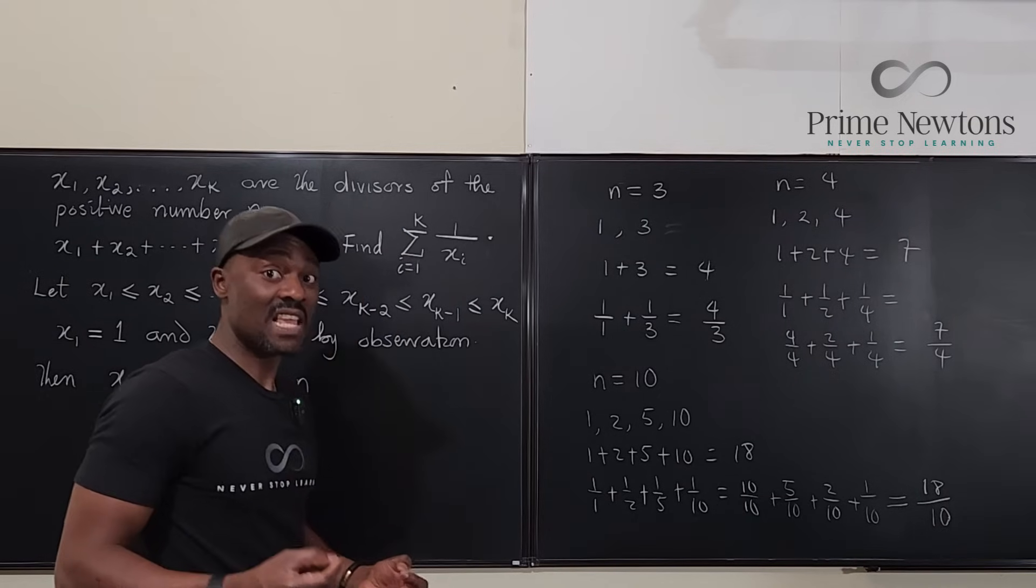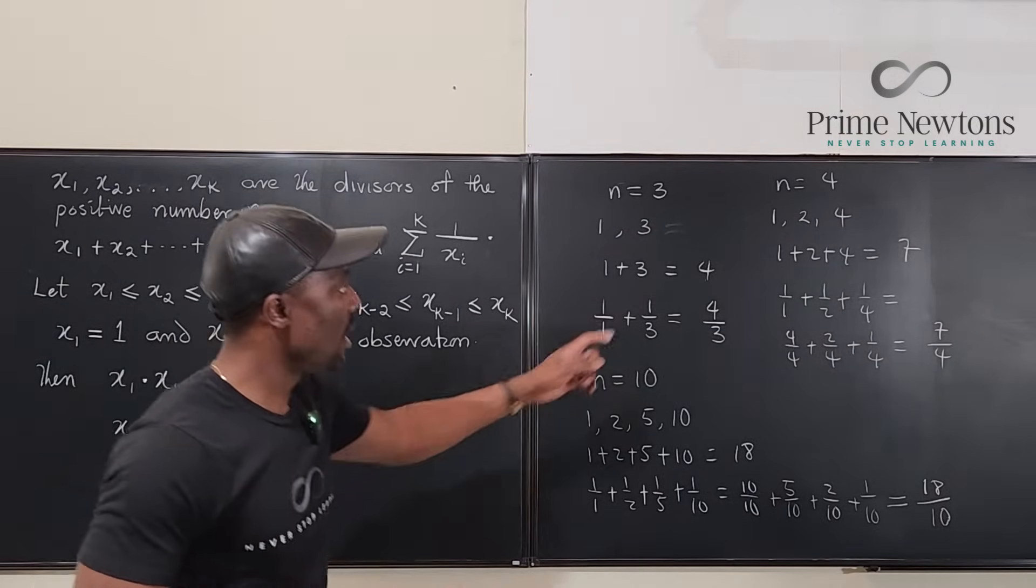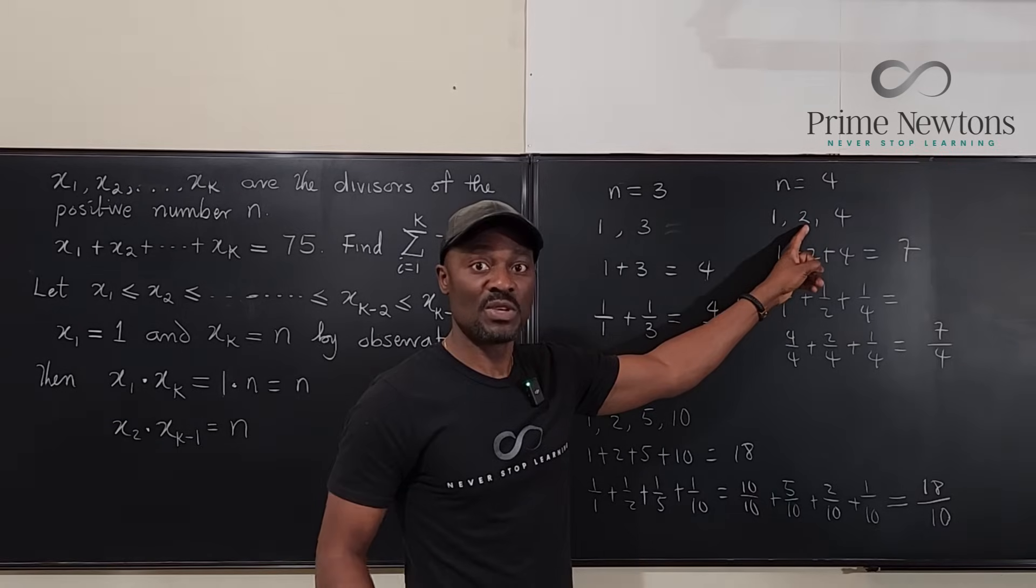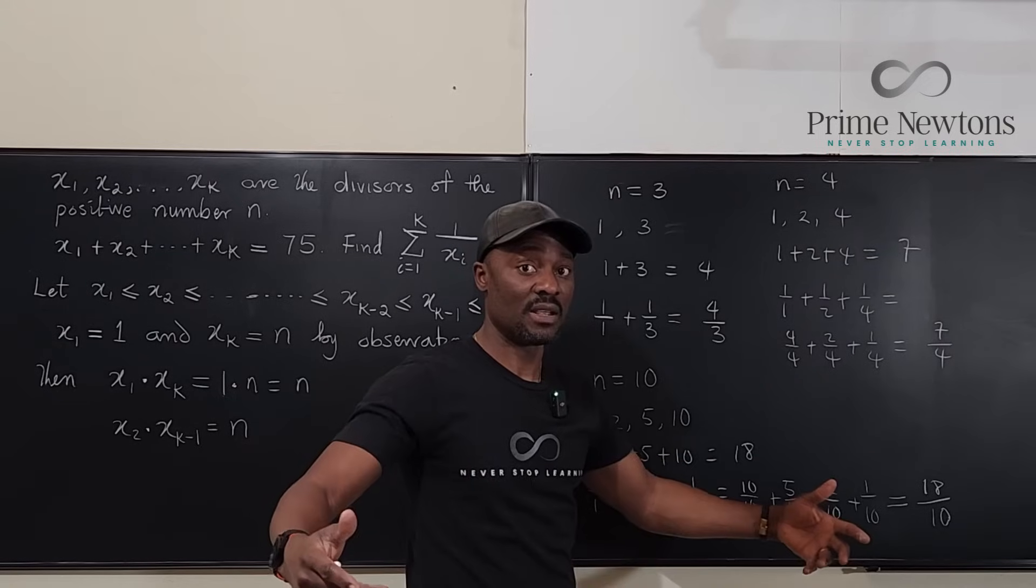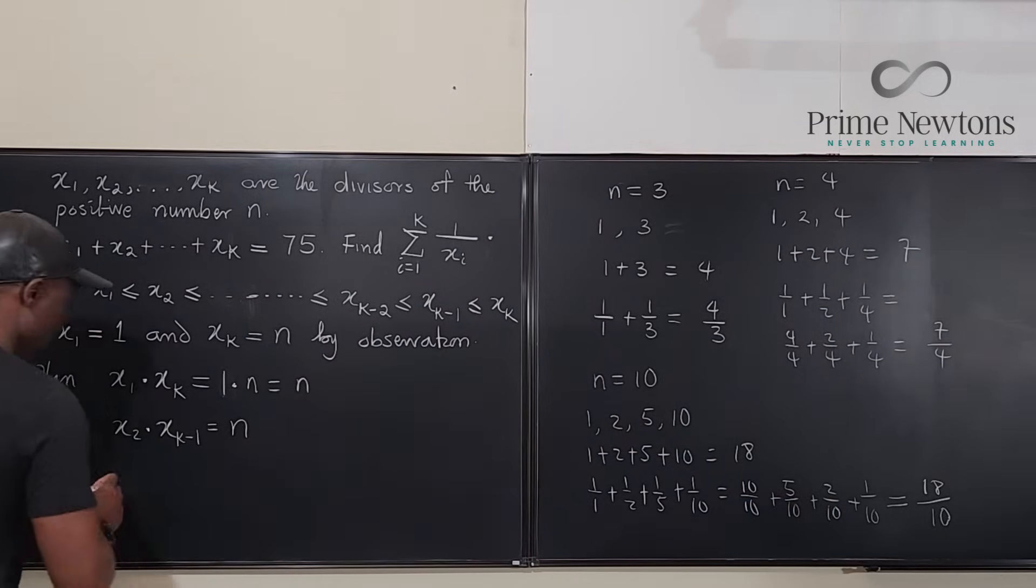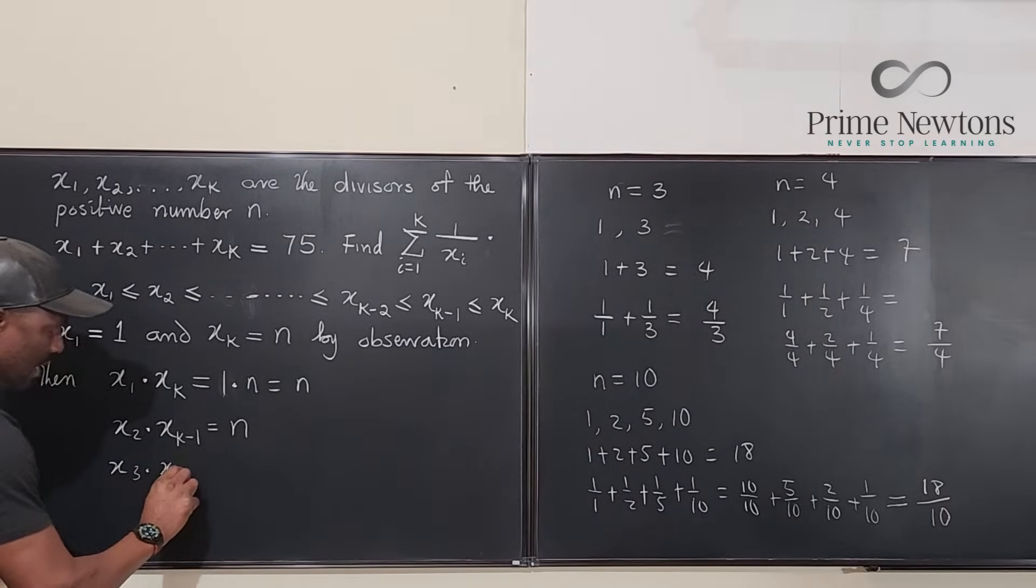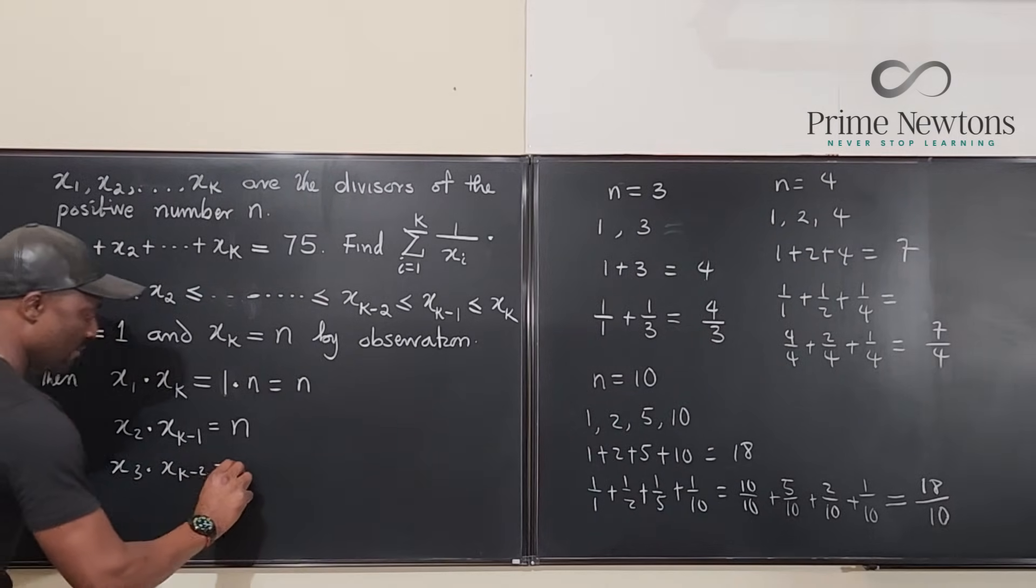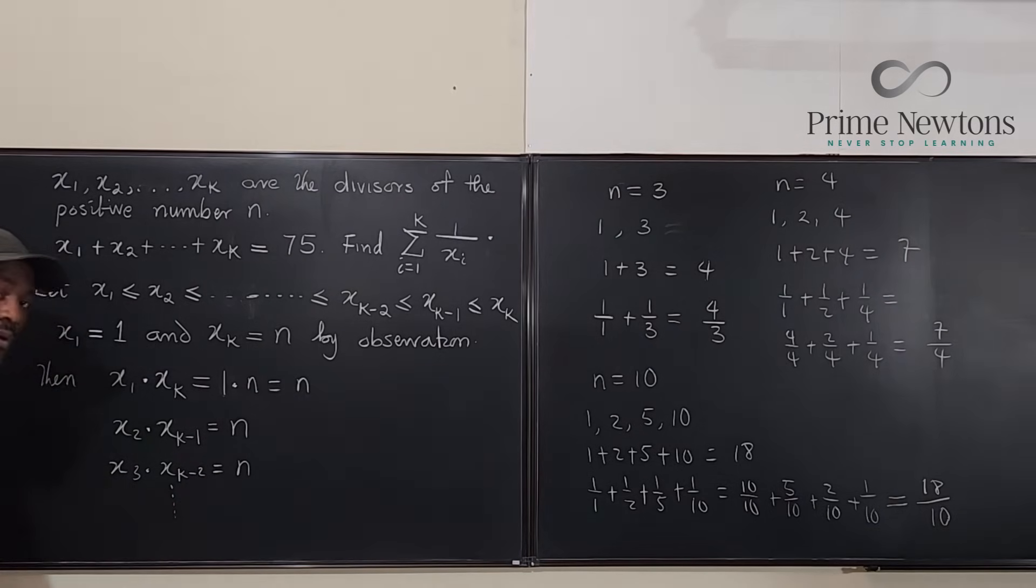Now, if it is an even number of terms, is it even? If it is an odd number of terms, the middle one will have to be a square. So, if you multiply it by itself, it will have to give you n. And like so. And then you go x to the third times x to the k minus 2 will have to also be n. And this goes on until you get to the last one.